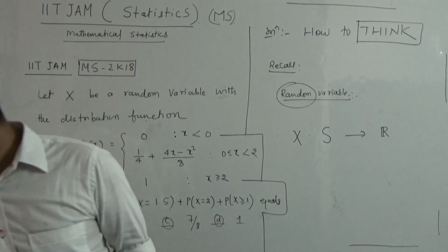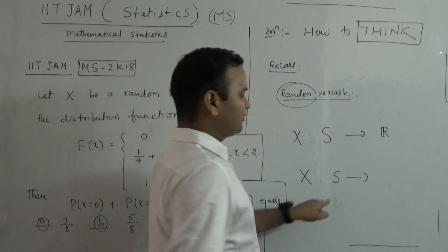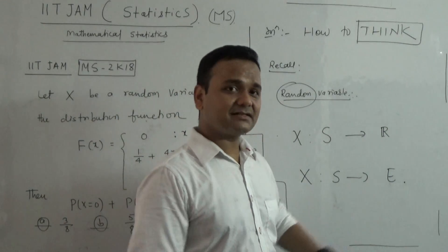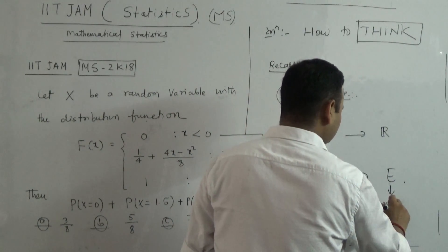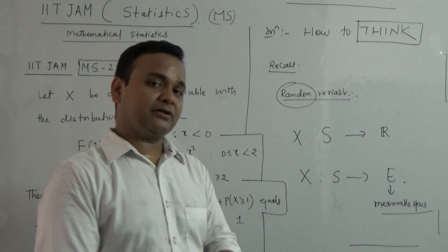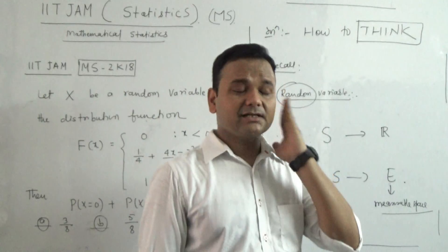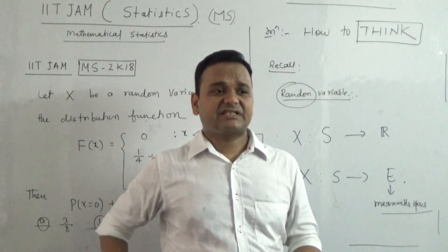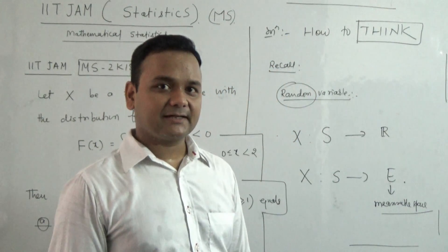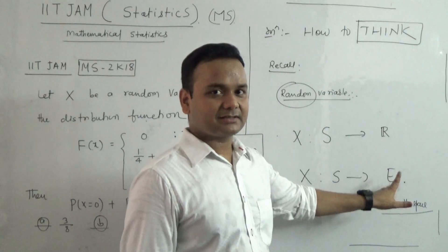After some time, when you know measure theory, the general definition of random variable is a function from a sample space to any measurable space E. In the long run, if you are going to do advanced exams, sometimes they use measurable spaces. But in IIT JAM exam, they usually concentrate on the basic definition — they are not going to ask this.